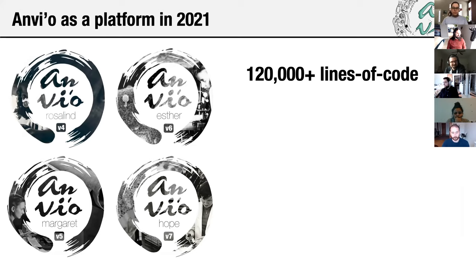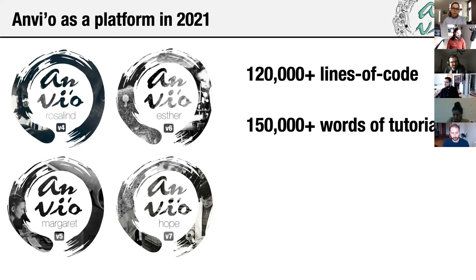This is a trove of code that is relatively carefully written — not just scripts put together, but with an actual design. There's a core library that other libraries rely upon, and other tools use those libraries. There are more than 150,000 words in our tutorials currently online. We're trying to make sure that life scientists can learn about this platform and start using it without needing us for their science.